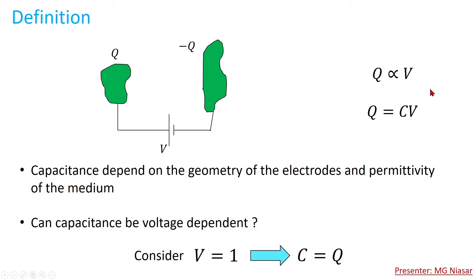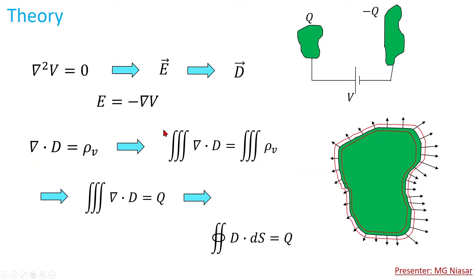So now we have the equation Q = CV, where C is the capacitance. If we apply one volt potential difference between the conductors, the amount of charge on one of them equals the capacitance. The theory says that if we have two conductors with a potential difference between them, we can calculate the electric field distribution and voltage distribution in the space by solving Laplace's equation. From the voltage distribution, using E = −∇V, we can obtain the electric field, and from that we can obtain the displacement field D.